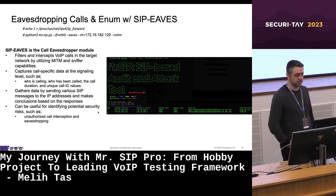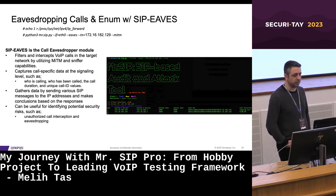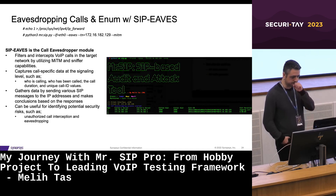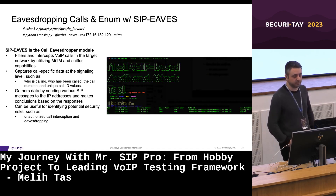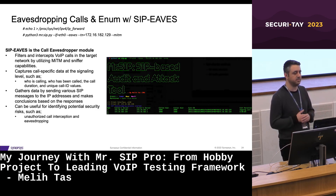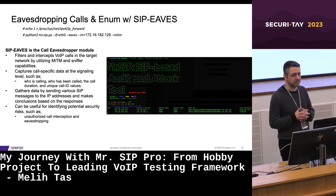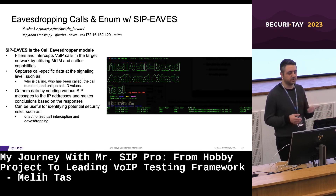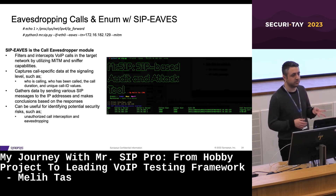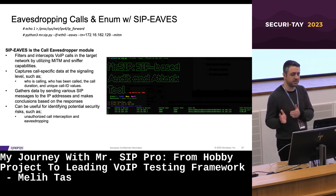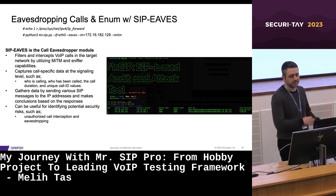Another information-gathering module is SIP EVUS, a Voice over IP call eavesdropper. It filters and intercepts Voice over IP calls in the target network by utilizing man-in-the-middle and sniffer capabilities. It captures and collects call-specific data at the signaling level, including who is calling, who is called, the duration of the call, and the unique Call-ID value. It feeds this data into other modules as well as automated scanning and behavioral modeling modes.